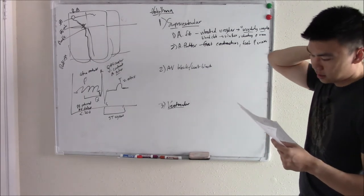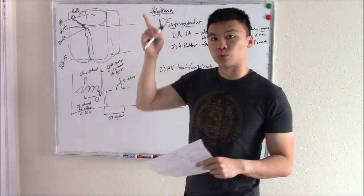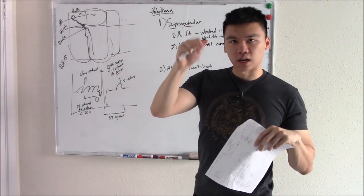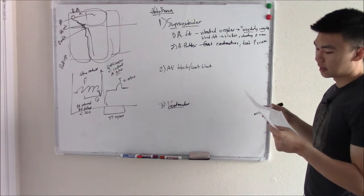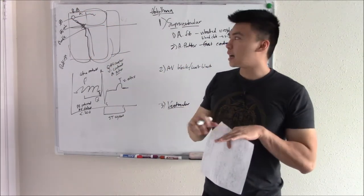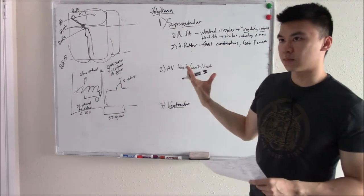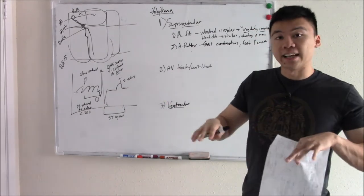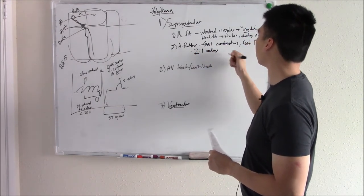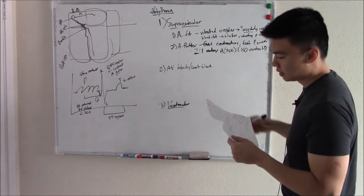One mechanism is re-entry: abnormal fibers carry the conductance back up to the atria instead of down, causing rapid repeated contractions. The good thing is the AV node — the gatekeeper — slows things down and won't allow all those fast signals through. It usually allows a 2:1 ratio. So if the atria contract 300 times, the ventricles will only contract 150 times.